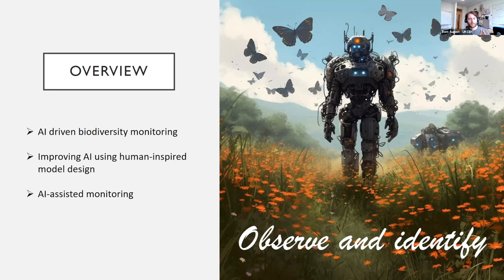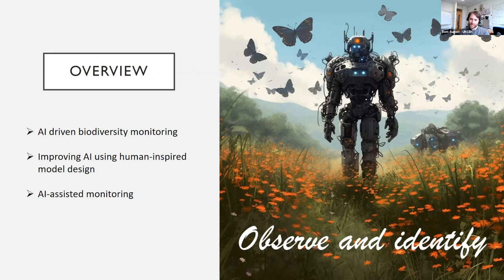I'm going to delve into the concept of observing and identification using AI through three different case studies. The first is about AI-driven biodiversity monitoring — can we build systems which do both observe and identify, driven by AI with minimal human involvement? The second is: can we improve the identification step by developing AI that are human-inspired in their model design, taking elements of what humans do when they identify species? And lastly, I want to talk about AI-assisted monitoring — how do we supply AI tools to assist a human undertaking these assessments?